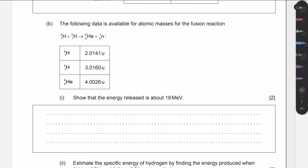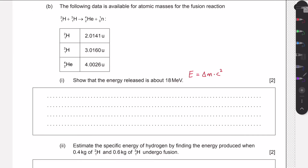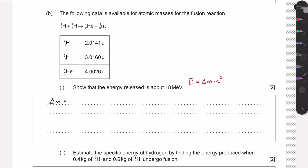We are told the following data for the atomic masses for a fusion reaction, and we need to show that the energy released is about 18 mega electron volts. We're going to use E equals mass defect times c squared, so we need to find the difference in mass from the reactants to the products and multiply that by the speed of light squared. To calculate the mass defect, we take the mass of all the reactants and subtract the mass of all the products.